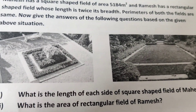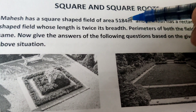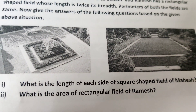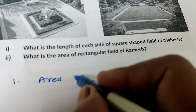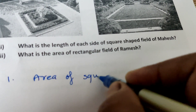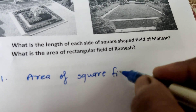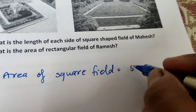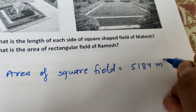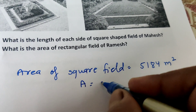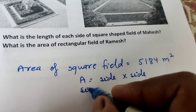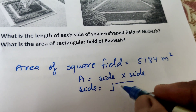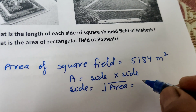The second question is: what is the area of the rectangular field of Rames? The area of the square shaped field is 5184 square meters. Since area equals side × side, we find the side by taking the square root of the area. Side equals square root of 5184.